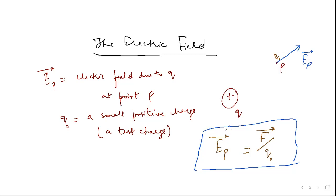Second thing: this electric field has SI unit of Newton per coulomb. The force contains both charges q and q0, but when you divide by q0 to get the electric field, q0 cancels out. So the electric field at point B is independent of the test charge — it only depends on q, which we call the source charge.